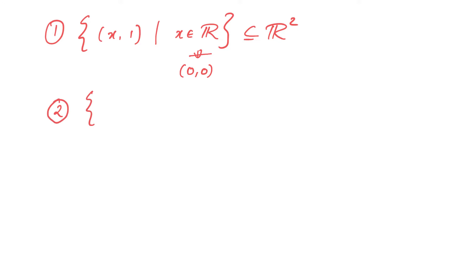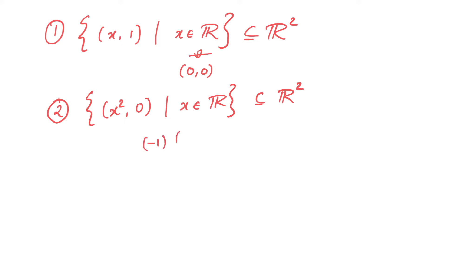Let us look at another example. Consider the set of all (x², 0) such that x belongs to R. Once again, this is a subset of R². Notice that this set contains the additive identity (0, 0). However, this set is not closed under scalar multiplication. Notice that minus 1 times (1, 0) equals (minus 1, 0), but (minus 1, 0) does not belong to this set as minus 1 is not the square of any real number.